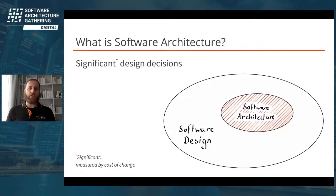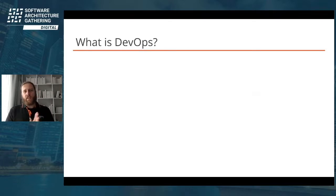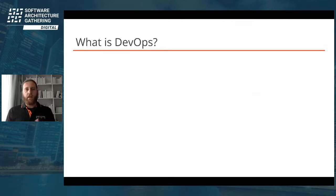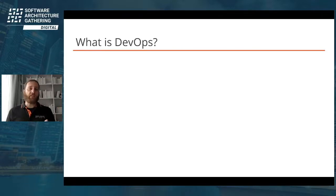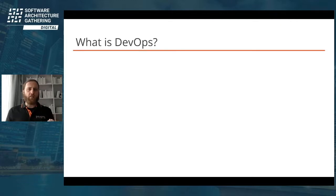When I talk about software architecture, I mean design decisions that have a high cost of change and are risky. The next question is: what is DevOps? With DevOps it's a bit difficult because the term has never been formally defined. The thought leaders on DevOps refuse to define it because they say the term would become stale and rigid.